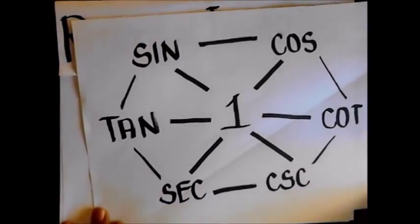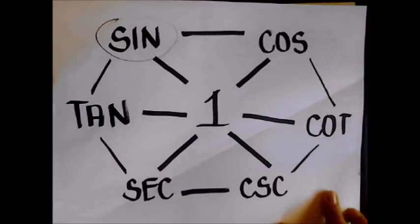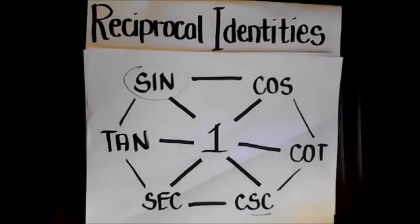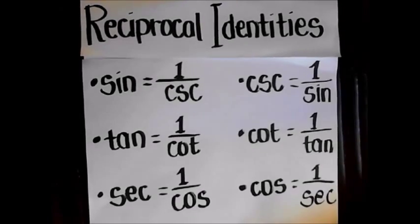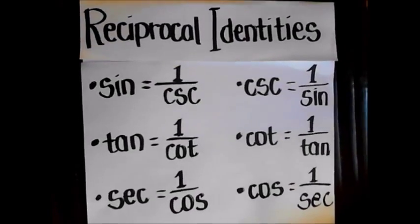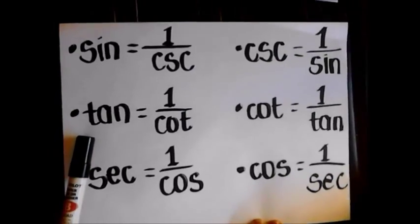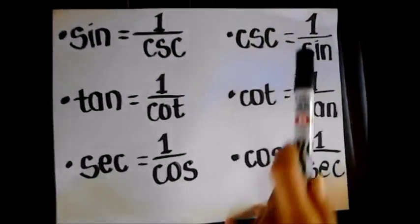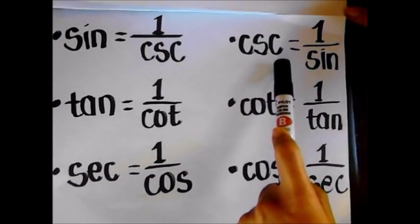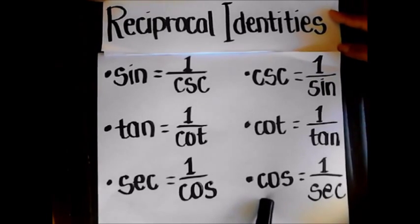You can also get the reciprocal identities by going through the center '1' of the hexagon. For example, sine equals one over cosecant, and secant equals one over cosine. Here are all the reciprocal identities: sine equals one over cosecant; cotangent equals one over tangent; secant equals one over cosine; cosecant equals one over sine; cotangent equals one over tangent; and cosine equals one over secant.